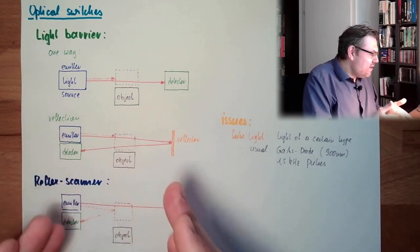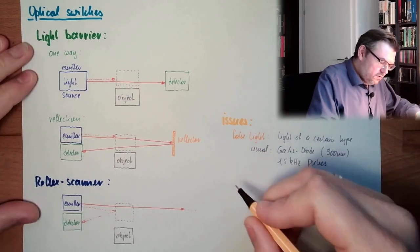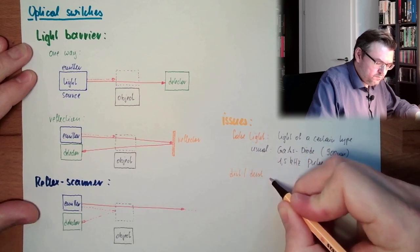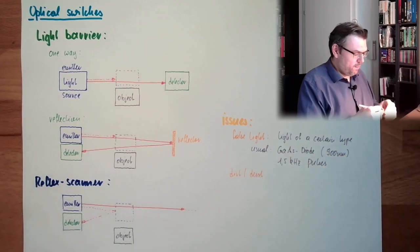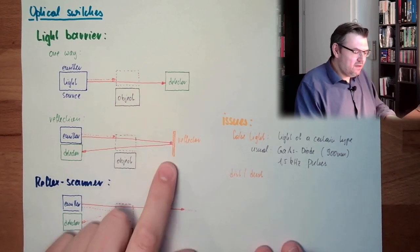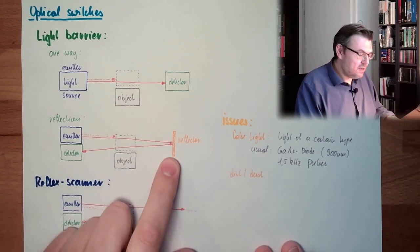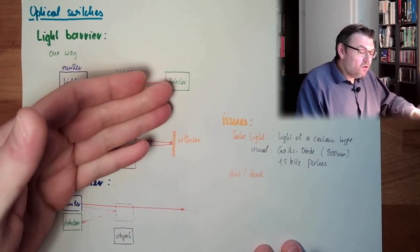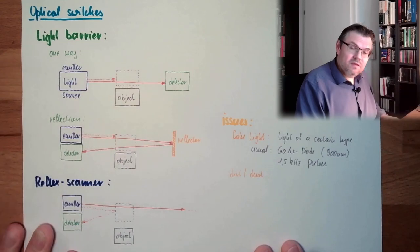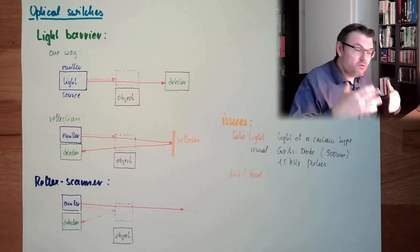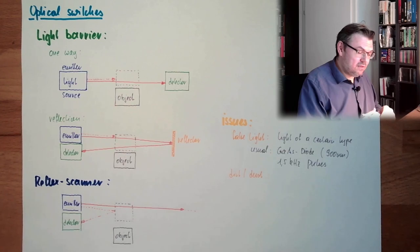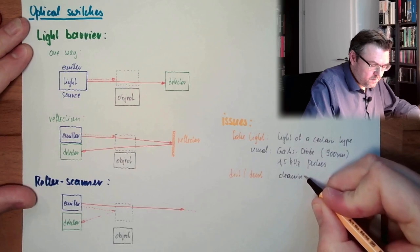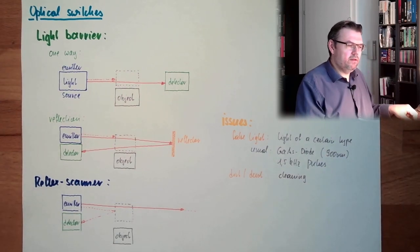Then of course, what is an issue? Dirt. Dust. These things need to be cleaned. If the reflector is getting dirty or dusty, it will not reflect. If there is a lot of dirt or dust in the air, you might not detect anything because the light is like a nebula, it's already blocked by some dust. Cleaning. That's the only way you can deal with this.